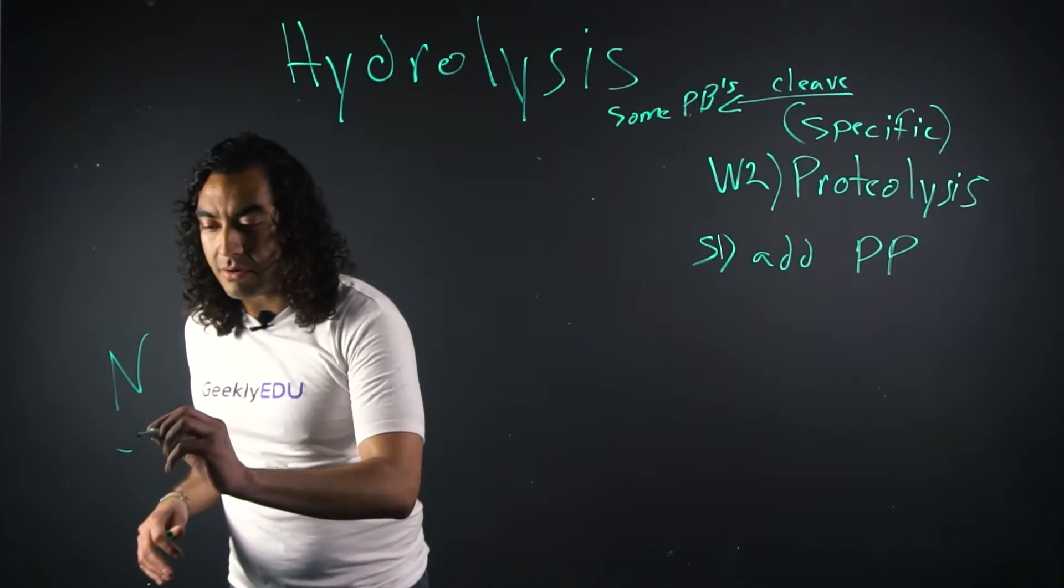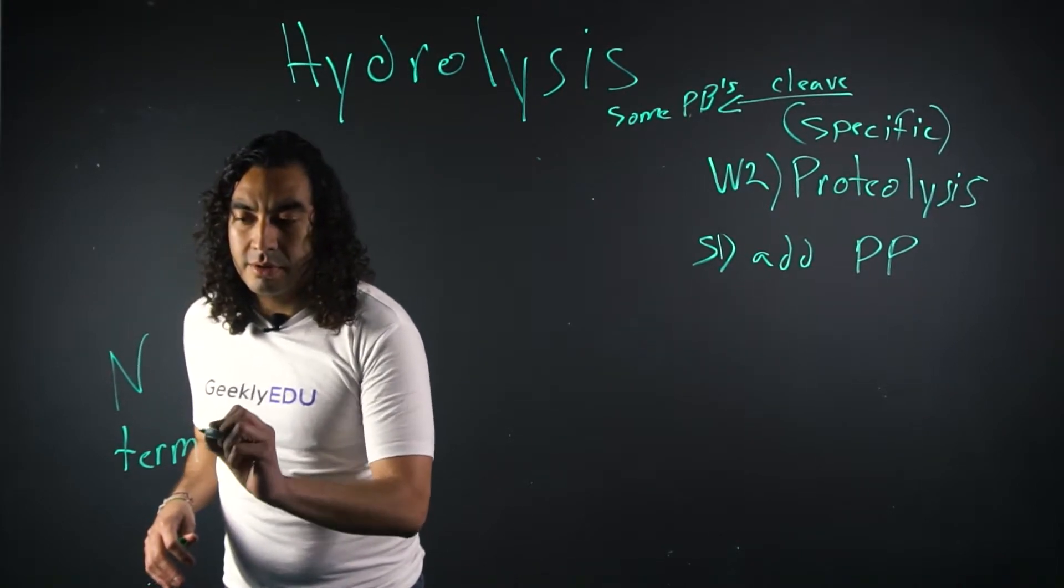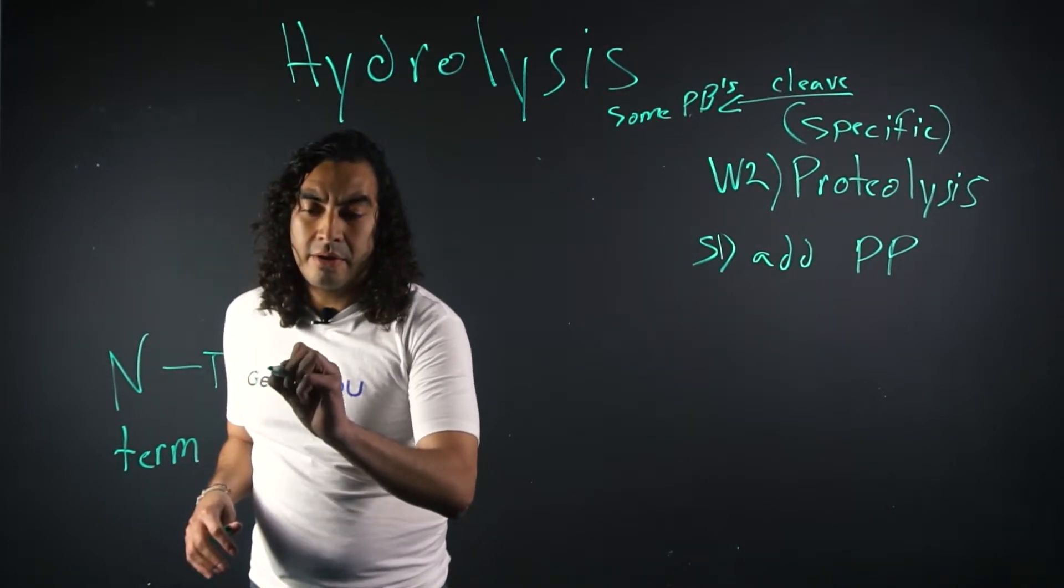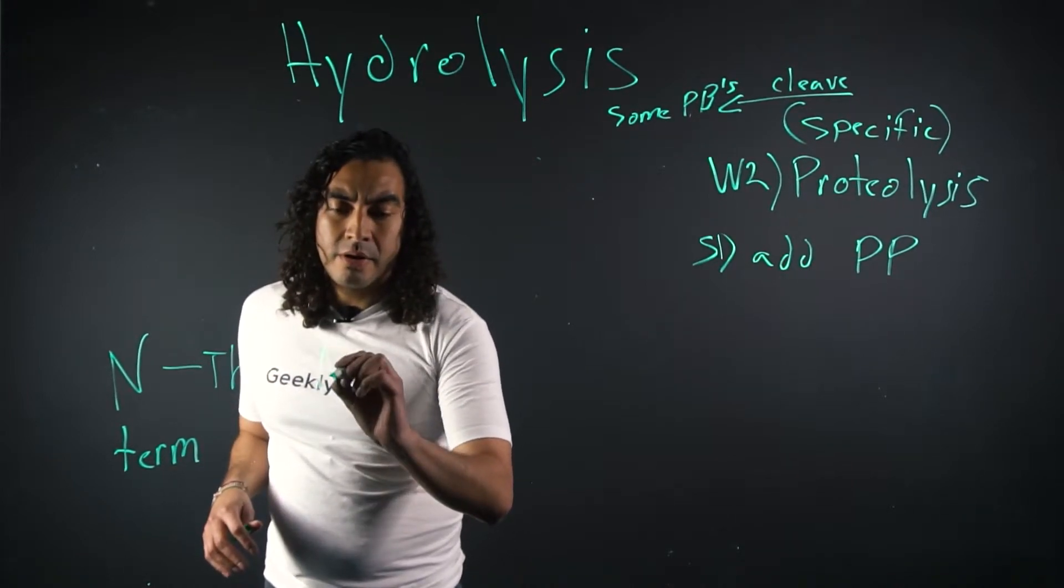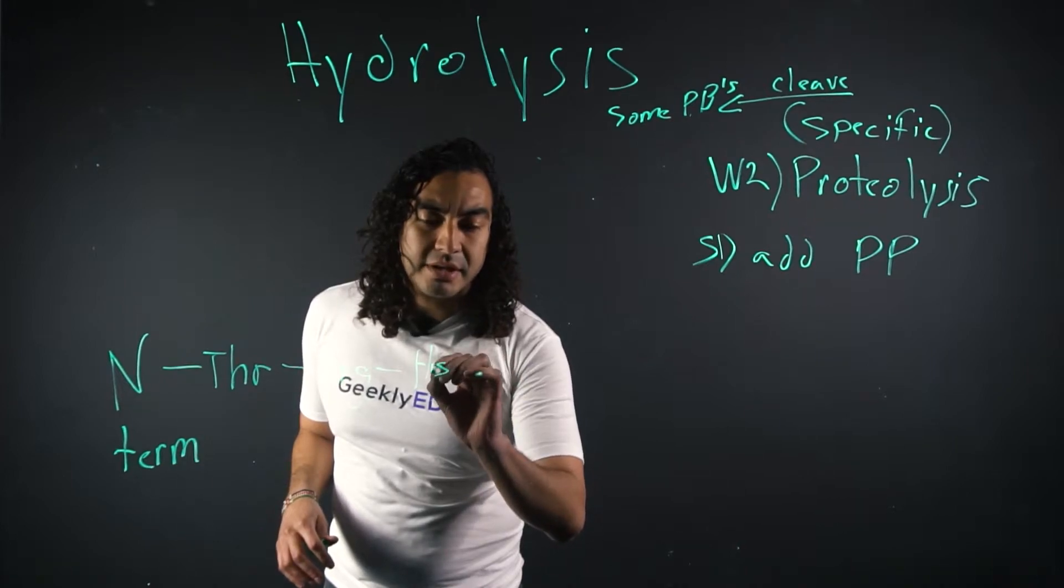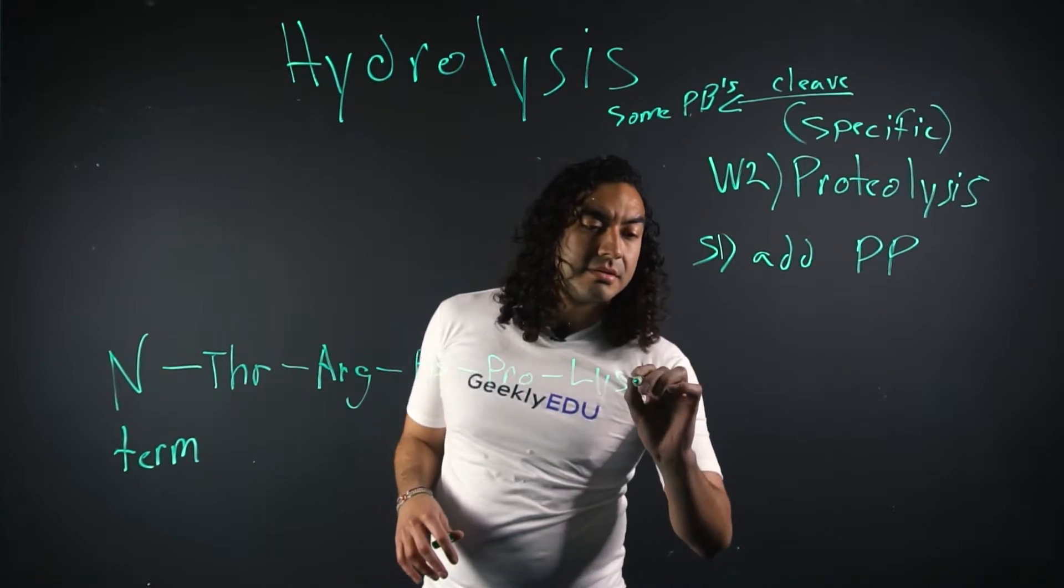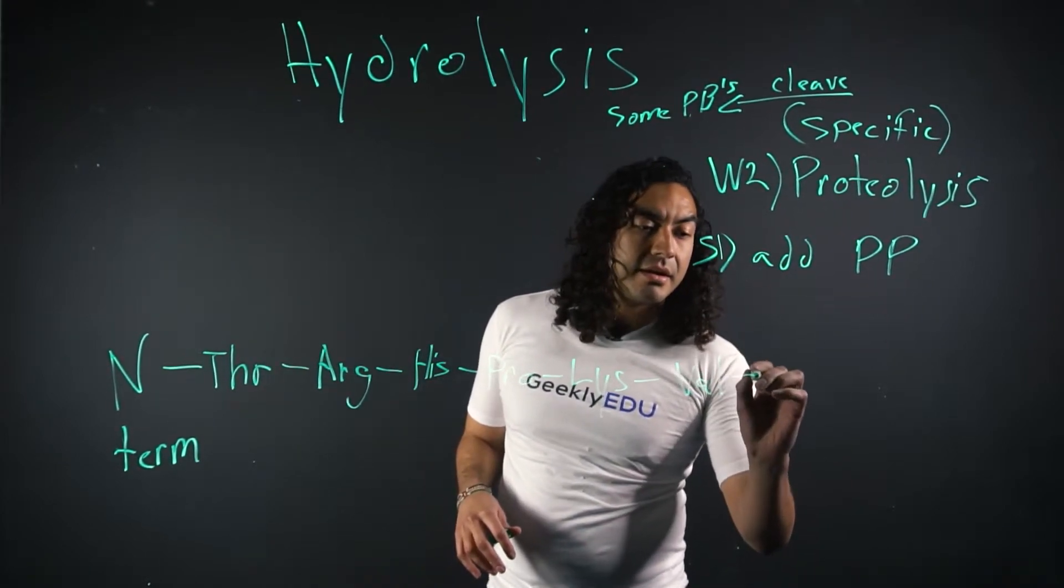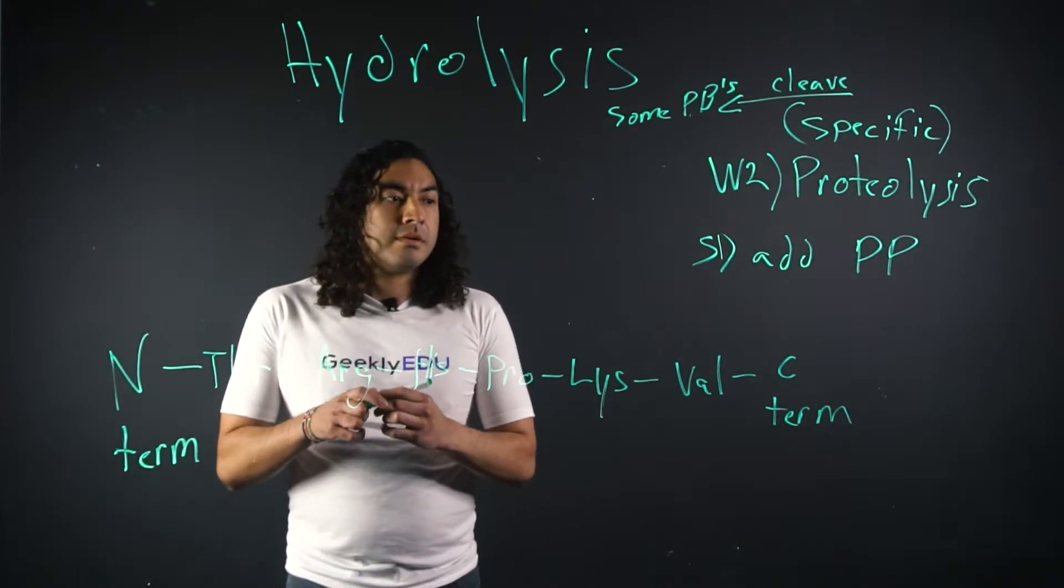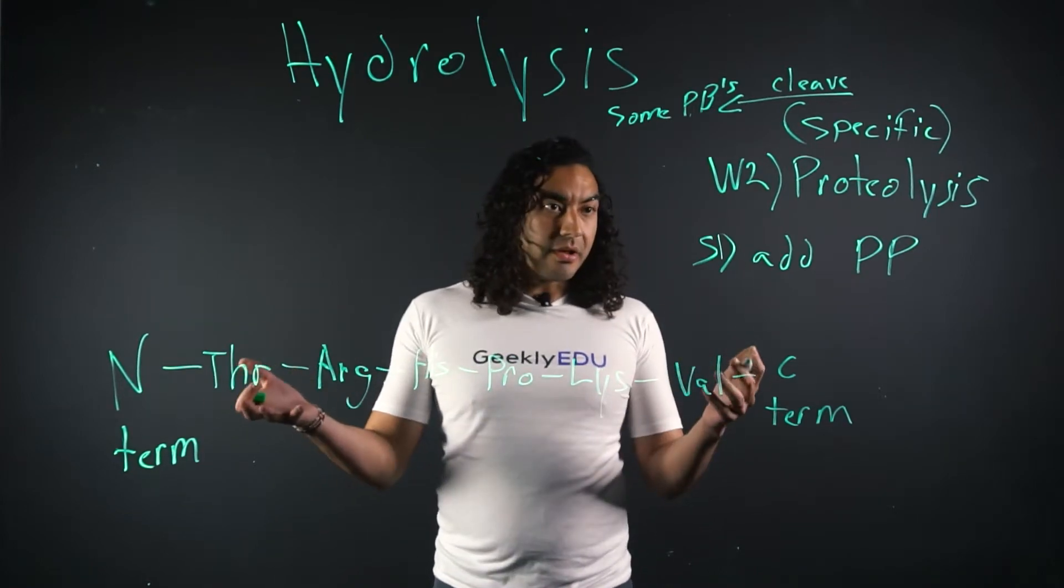So we have our N-terminal here. N-terminal here. Going to write in some specific amino acids. So we're going to write in threonine, arginine, histidine, proline, lysine, and valine. And we're going to have our C-terminal here. So we have that in. So that's step one. Here's our polypeptide.